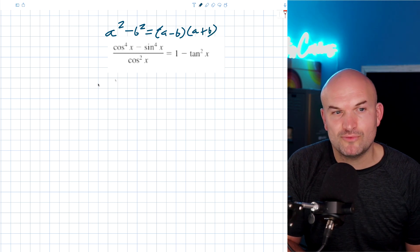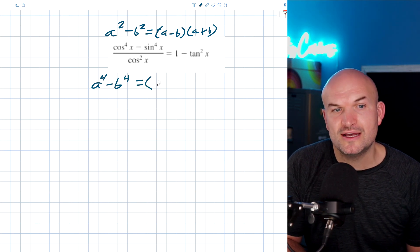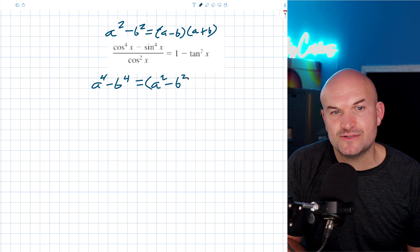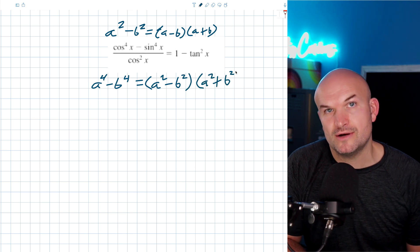Right now, the reason why this is important, because if I had like an a to the fourth minus a b to the fourth, I can still use the difference in two squares. It's now just going to be an a squared minus a b squared times an a squared plus a b squared.